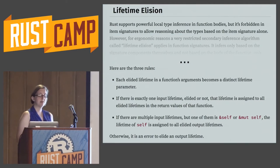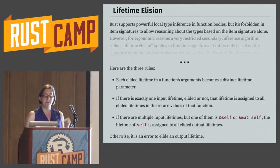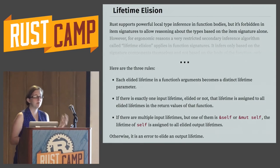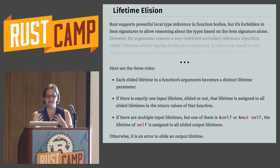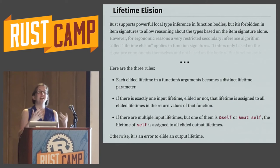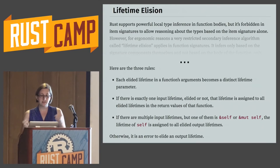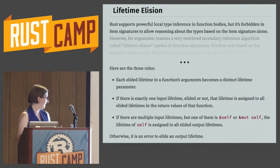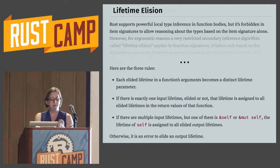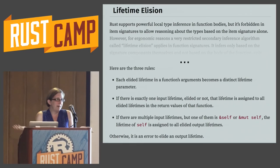If we take a look at the documentation, there's the lifetime elision section with the three lifetime elision rules. As a beginner reading these, you might think the rules were a decision made early on and that all Rust code has always followed these rules. It sounds very strong, very strict, very designed. But we don't know for sure that this has always been around or whether they've changed at all, and we don't know who came up with these rules. So if we wanted to find this out, one thing we know is that these rules exist in the documentation.